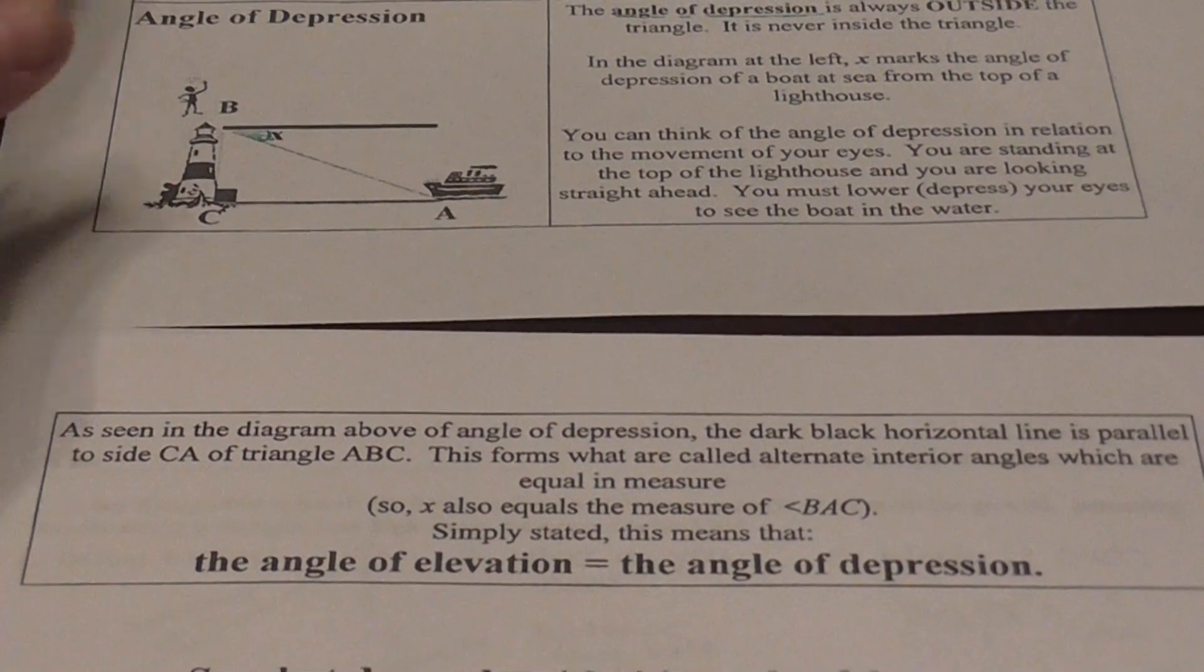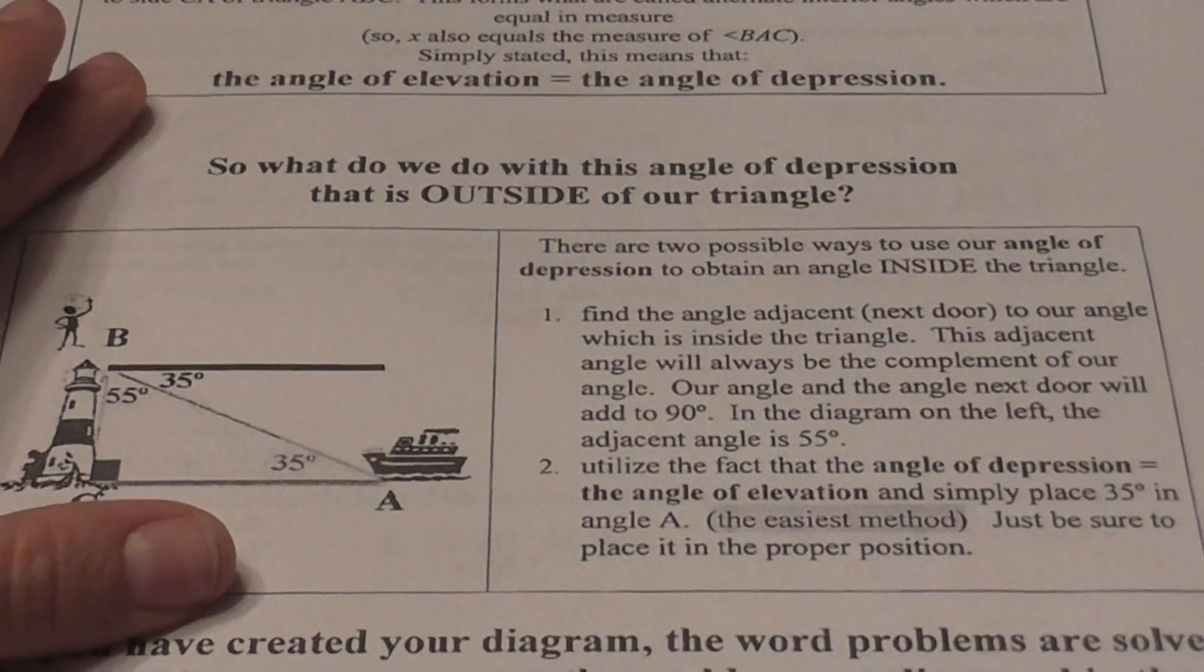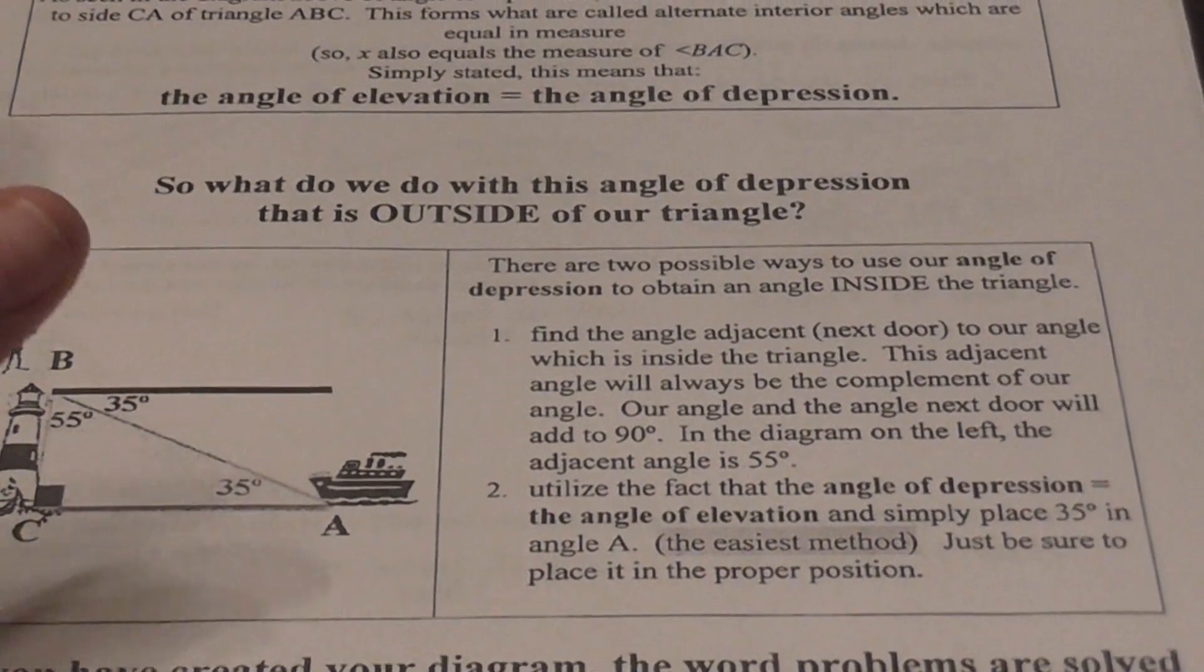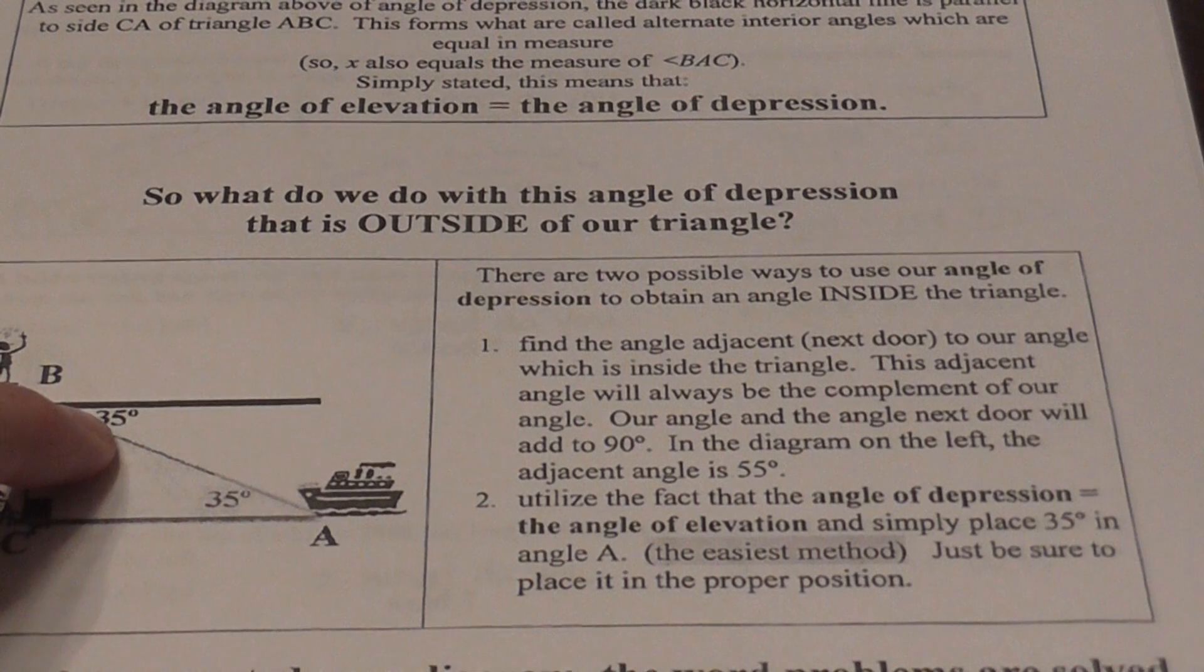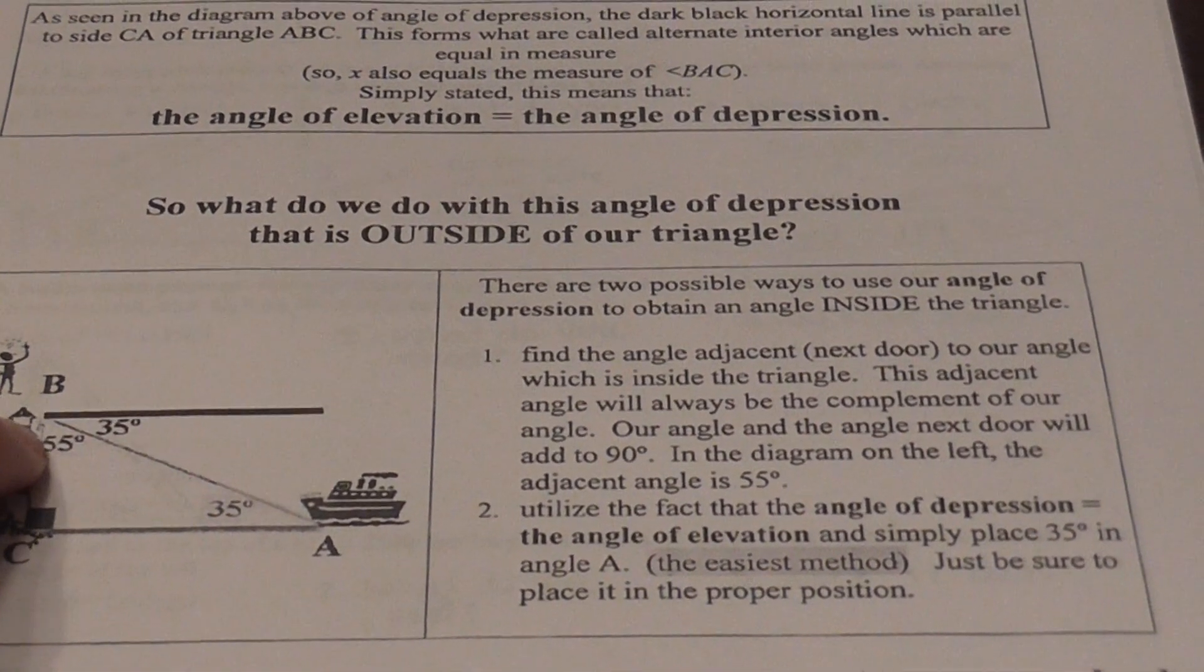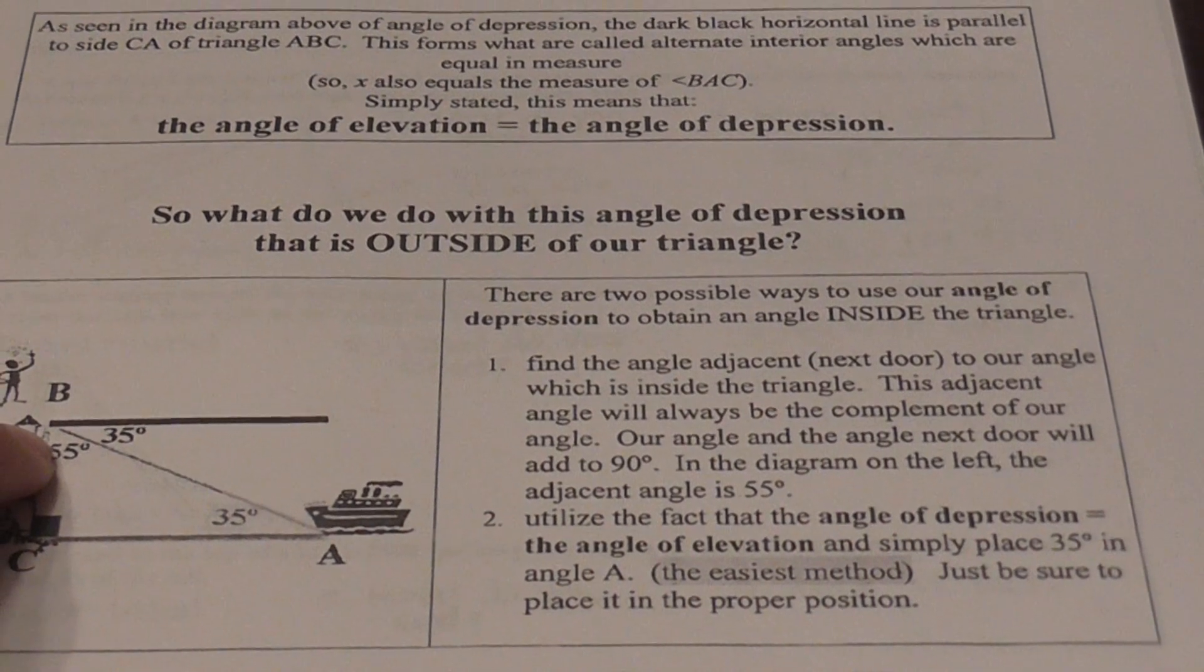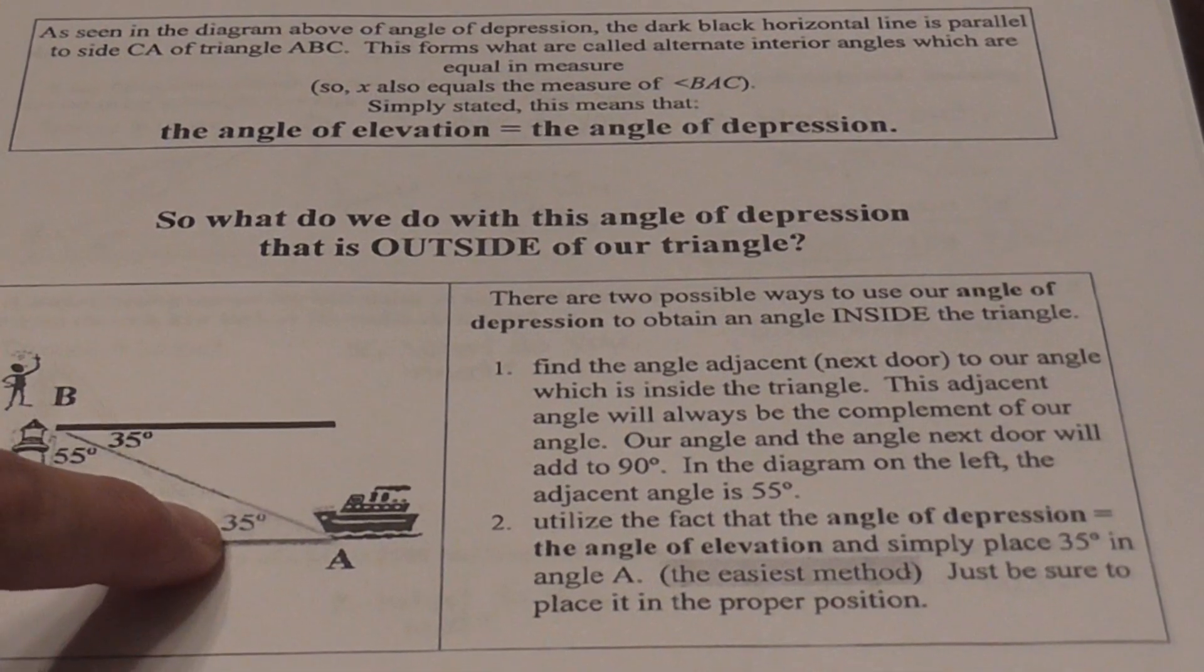Okay, so when we have the angle of depression that's outside of our triangle, there's two ways to handle it. Number one is to subtract your angle of depression from 90 degrees to get that inside angle so that you get the top angle of the triangle.